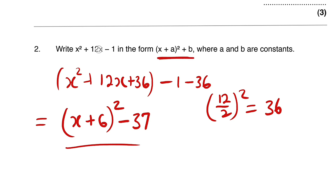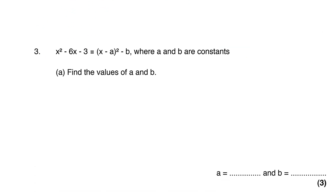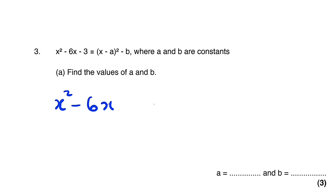Let us move on to question number 3. We are given x squared minus 6x minus 3, and we are asked to transform it into this form and find the values of a and b. We write x squared minus 6x, leave a space, then minus 3. Half of negative 6 is negative 3, and negative 3 squared is 9. So we add 9 and take away 9.